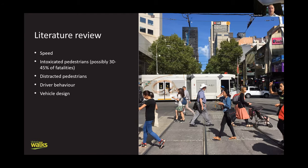To summarise the literature review: one of the first things covered was vehicle speed, which is obviously a significant factor in collisions. The faster someone is driving, the less time they have to react and stop to avoid a crash. And if they do hit someone, the faster they're going, the more likely they are to injure that person.